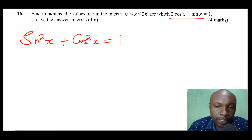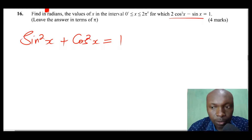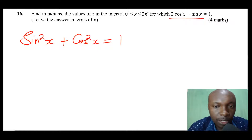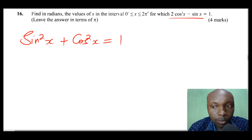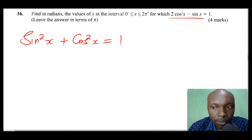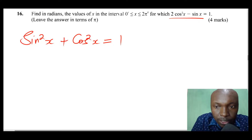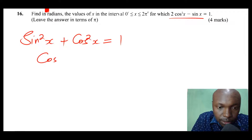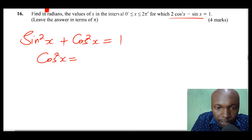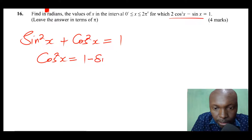As you can see, in this trigonometric equation we have cosine and sine. We cannot work with that very well — we must make them uniform, either all sine or all cosine. Using the identity, I will make cos²x the subject, so I get cos²x equals 1 minus sin²x.